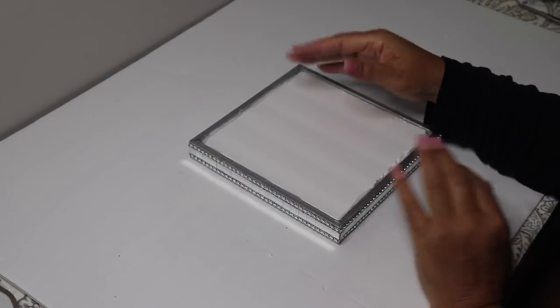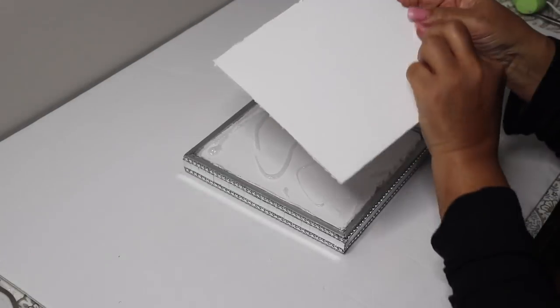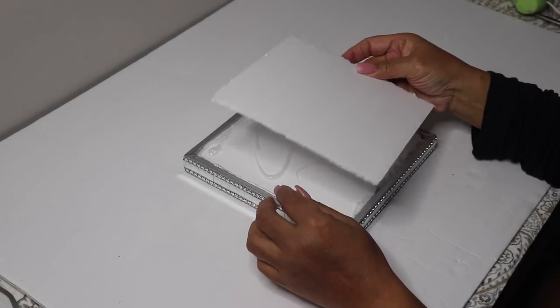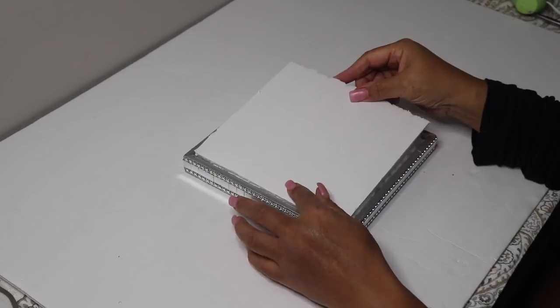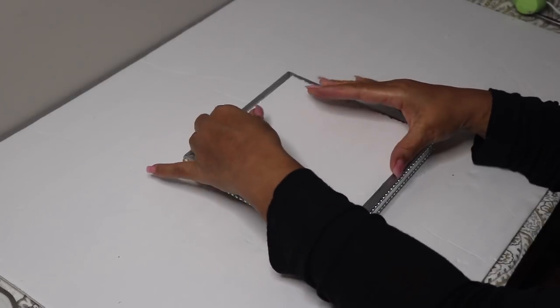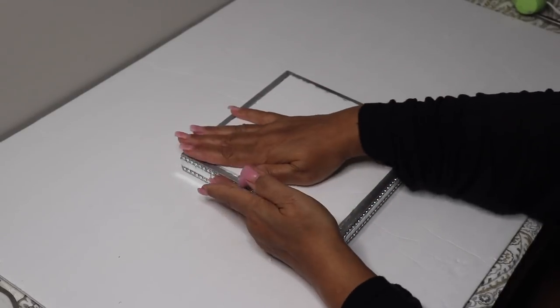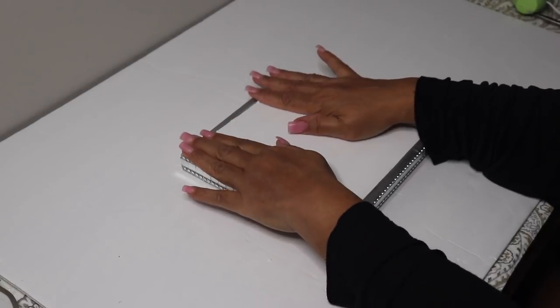Now I'm going to stack a second piece of foam board on top of the first piece. This will help keep the lid in place when it's sitting on top of the box. I put hot glue on the bottom piece, made sure that both pieces were lined up, and then held them together until the glue set up.